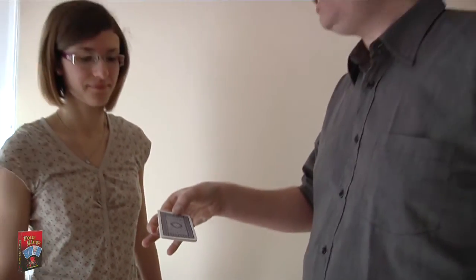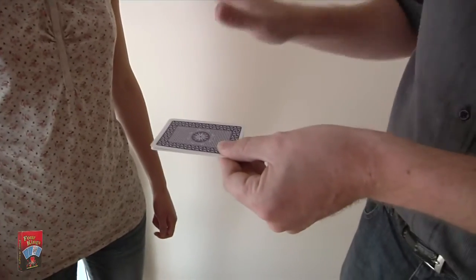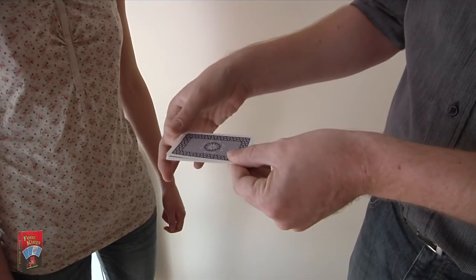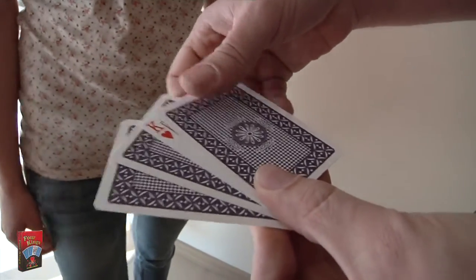And, as I said, one card is a little bit special. You could have named any king. You named the king of hearts. And the king of hearts is the only one turned round.